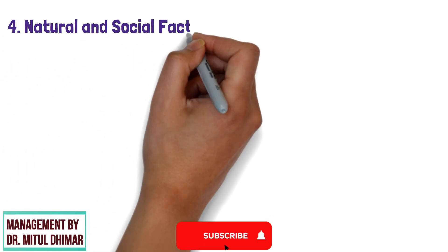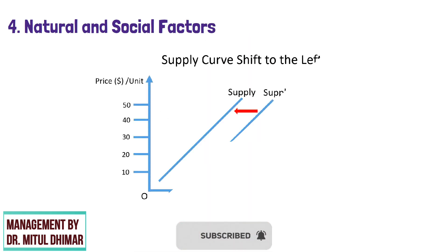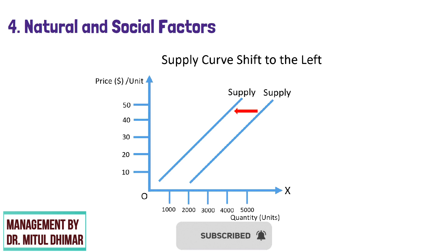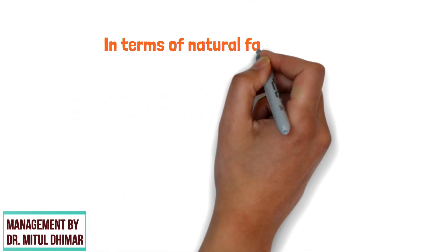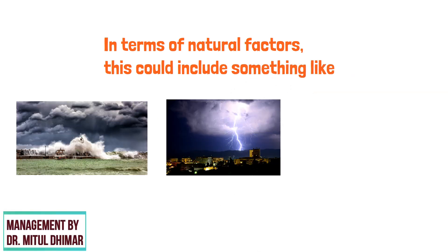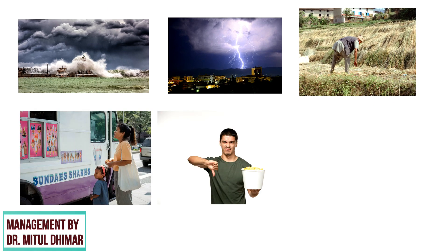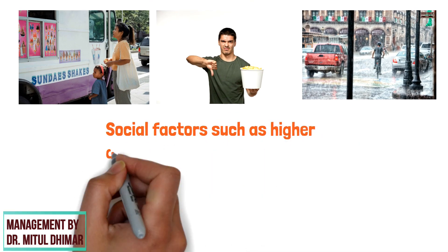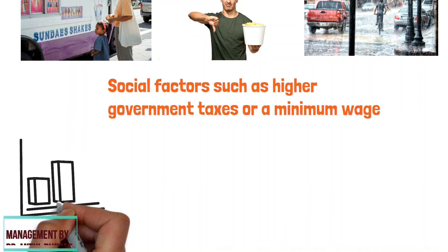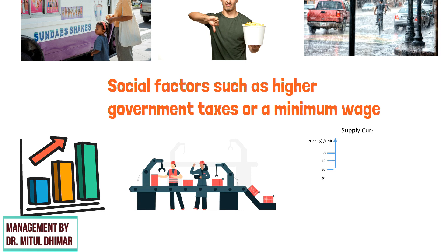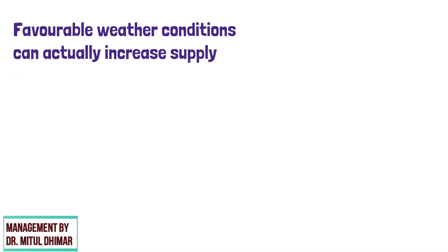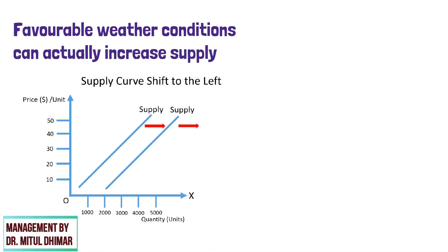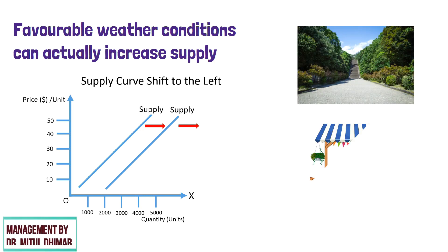Number 4: natural and social factors. Natural and social factors generally cause the supply curve to shift to the left by reducing supply. In terms of natural factors, this could include something like a hurricane, the weather, or even a poor harvest. Ice cream vans, for example, are unlikely to supply their services during periods of heavy rain. Social factors such as higher government taxes or a minimum wage may increase the cost of production, which can also push the supply curve to the left. By contrast, favorable weather conditions can actually increase supply and shift the supply curve to the right — nice sunny days are more likely to attract ice cream vans. Similarly, lower taxes put lower price pressures on businesses, which can react by increasing supply.